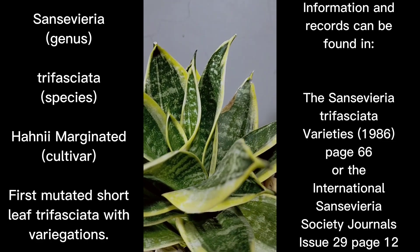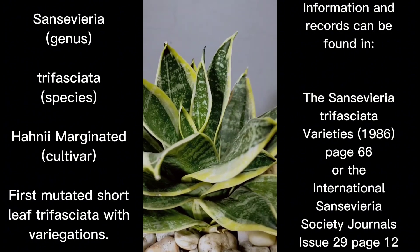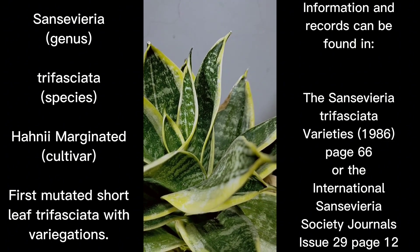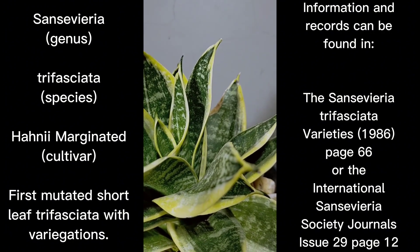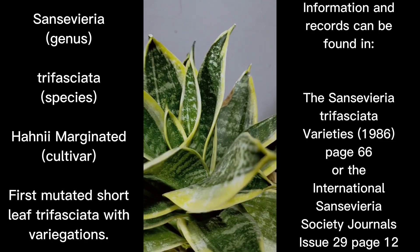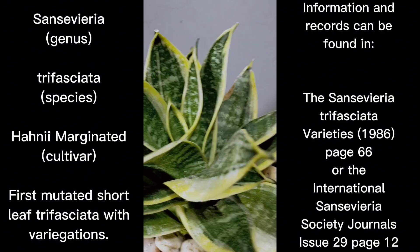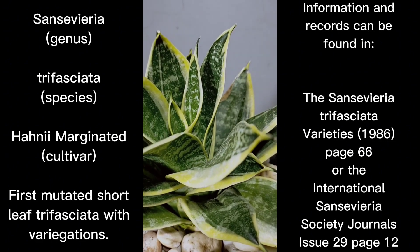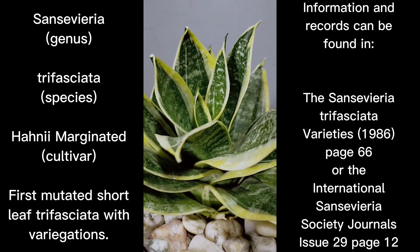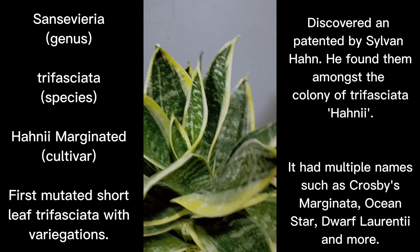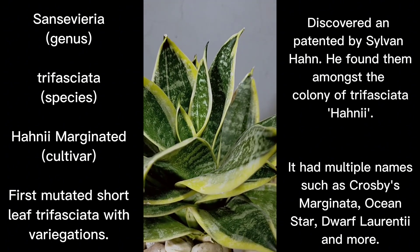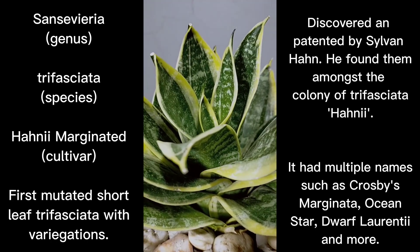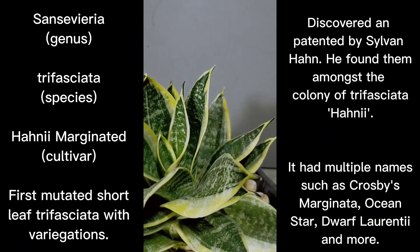Just to clarify: when we speak about margins on trifasciatas, the margins can actually be the leaf color itself — which is green — or they can be dark green, light green, or banded. It doesn't necessarily mean that when we call it 'marginated' it's already yellow or white. A marginated plant could have margins of leaf color or of variegation, so the term doesn't limit itself to variegated plants.